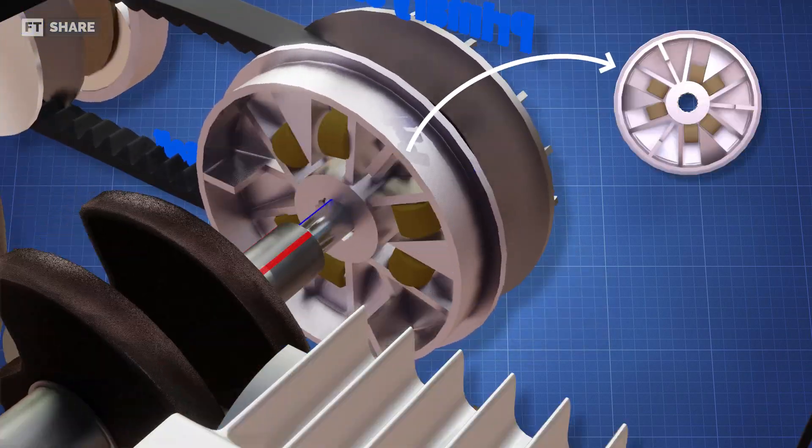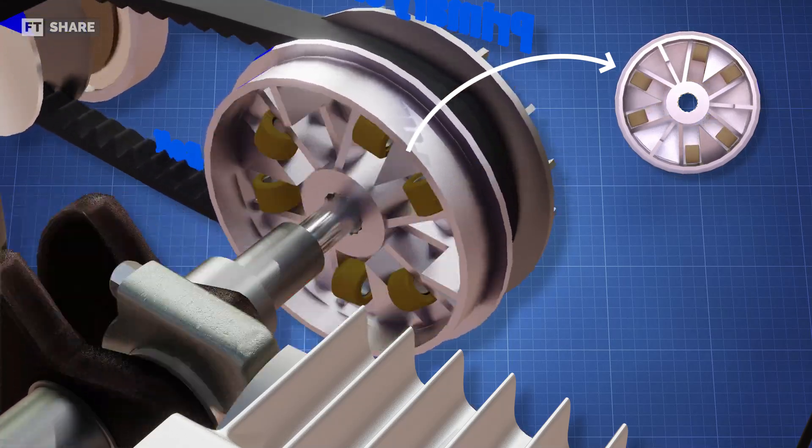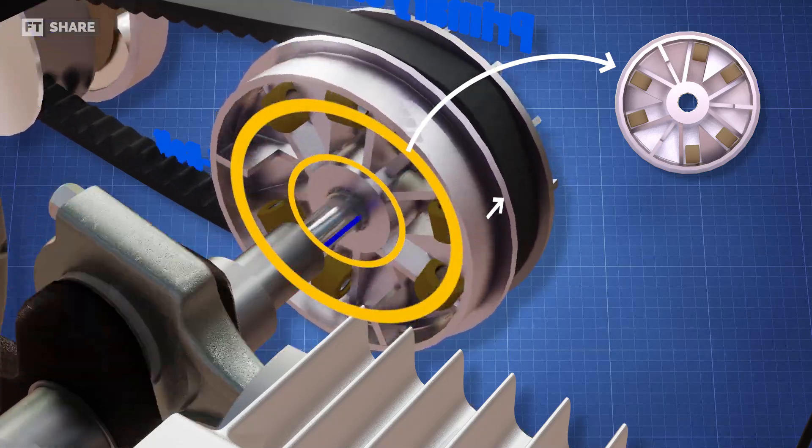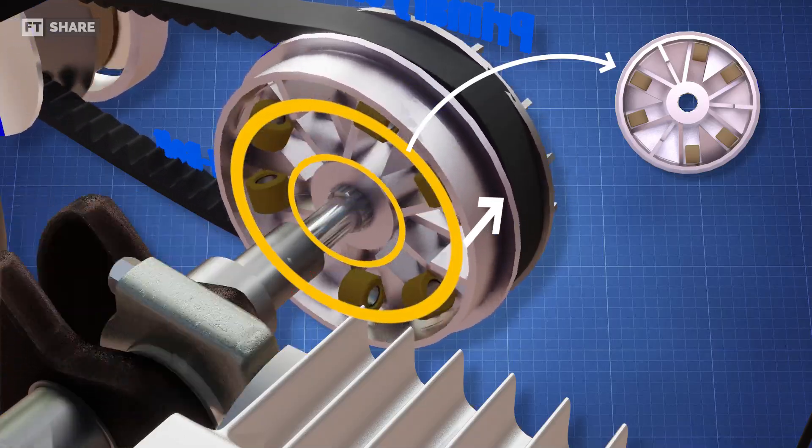As the engine speeds up, centrifugal force causes the rollers to move outward along the curved surface. These rollers will work to push the primary pulley as the cam plate holds its position, forcing the pulley to move toward the fixed pulley.